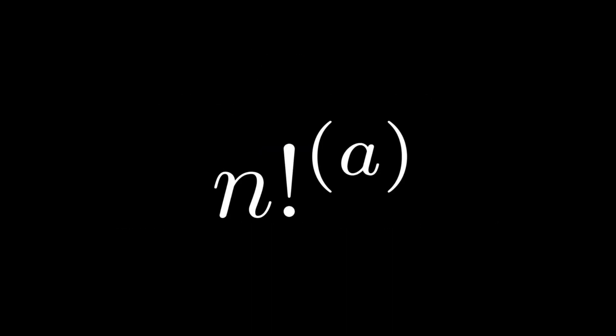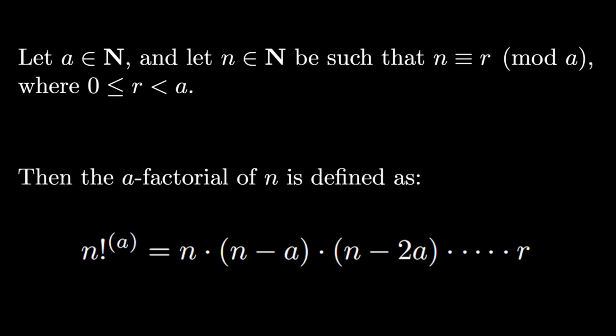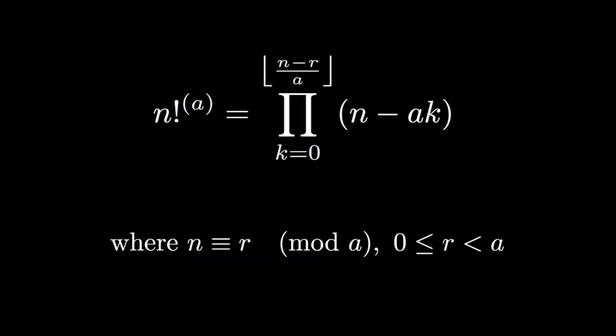We can generalize this idea to any step size a, leading to quadruple factorials, quintuple factorials, and beyond. If we let a and n be natural numbers where n is congruent to r mod a, then the a factorial of n is this product from n down to r in steps of a. This definition can also be written in product form.